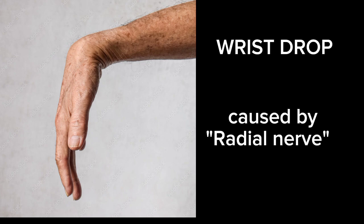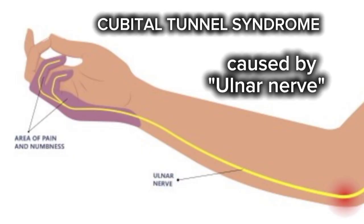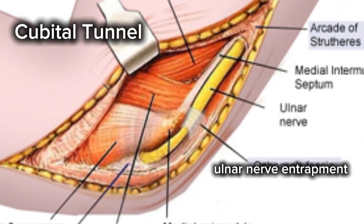The first disease is wrist drop — Radial nerve palsy. The second one is Cubital tunnel syndrome, which involves Ulnar nerve entrapment. The cubital tunnel is present on the elbow, above the medial epicondyle.